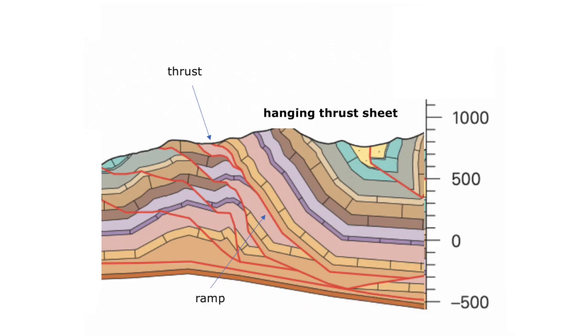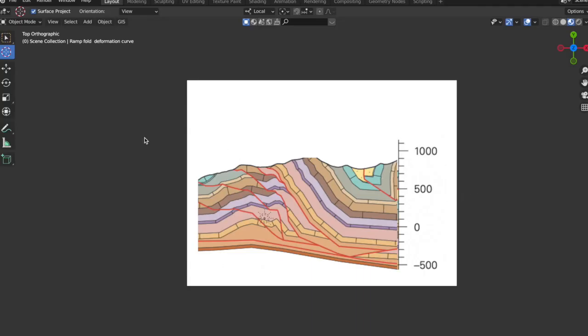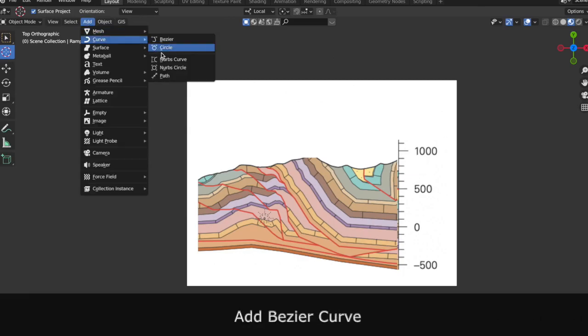We will use the modifier deform with a curve to construct the hanging part of the thrust sheet that formed through brittle faulting and bending above a ramp. Add a bezier curve and shape it according to the geometry of the hanging thrust sheet.